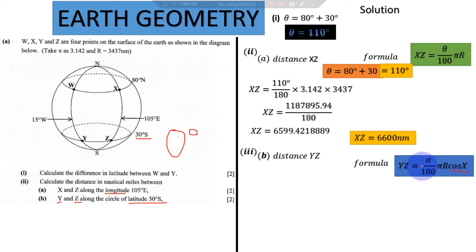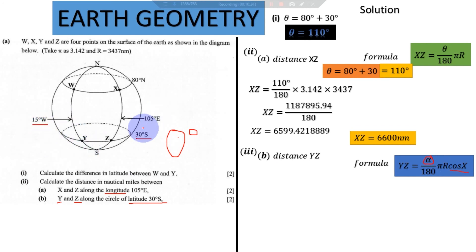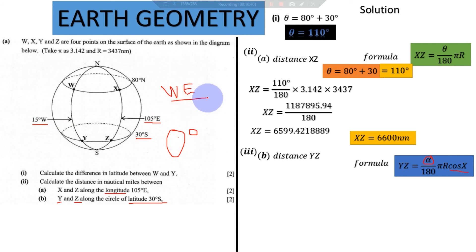Don't get confused with alpha — it also represents an angle. Here, theta was the difference in latitude, but in this case since Y and Z are on the same latitude, they are on different longitudes, so the difference in their longitudes is the value for alpha. Y is at longitude 15 degrees West and Z is at longitude 105 degrees East. West and East are different poles, so we add: 15 plus 105 gives alpha = 120 degrees.